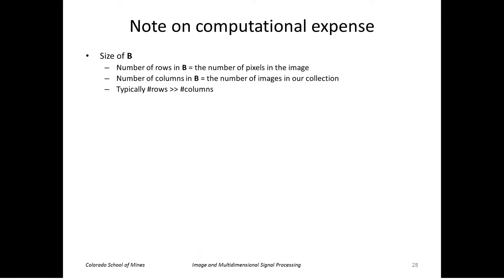Okay, quick note on computational expense. This has to do with the size of that B matrix. So remember B was the matrix formed by all our images in our set, so the number of rows was the number of pixels in each image, the number of columns is the number of images. So typically the number of rows is much greater than the number of columns.